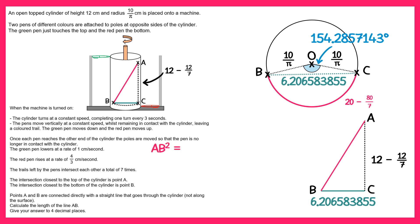So we can now use Pythagoras to find the length from A to B. So it would be AB squared equals this squared plus this squared. If you work out the right hand side you get this and then if you square root it you get your answer which is this to four decimal places.